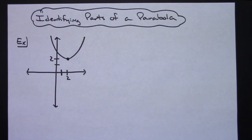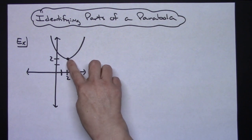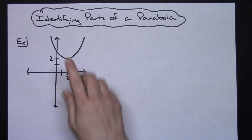In this video, I'm going to be taking a look at identifying parts of a parabola. I have an example here of just a rough sketch of a parabola that has a vertex at (2,2).